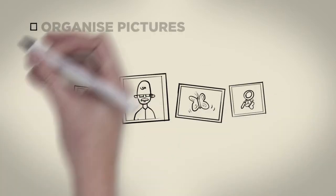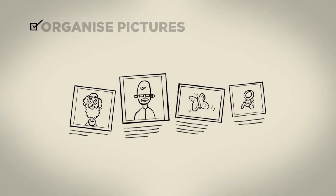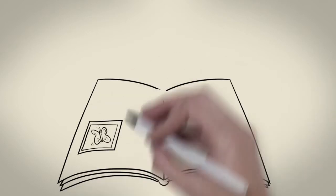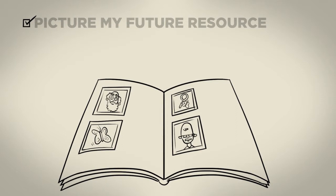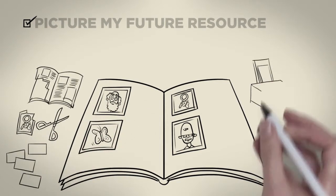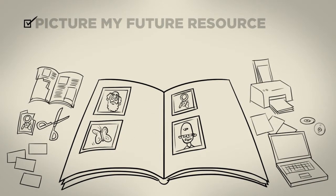Work with the person to organize the pictures the way they want them displayed. Write a caption under each picture that reflects what the person said about it. Talk to the person about developing a Picture My Future resource, which is a collection of all their pictures. There are a variety of ways people can collate and store these pictures.